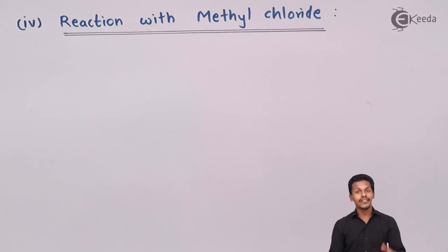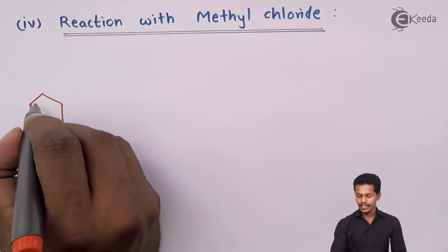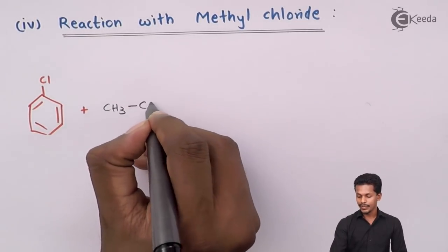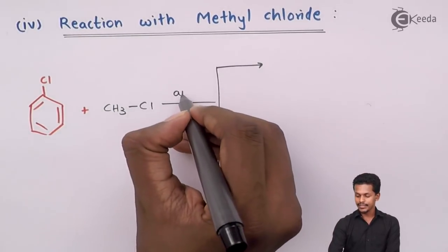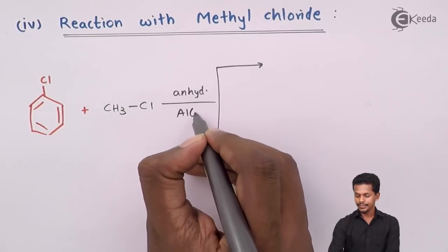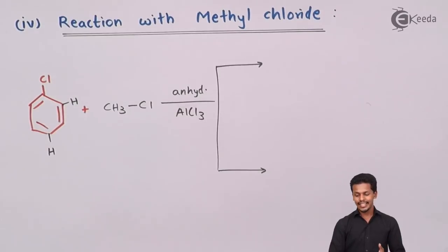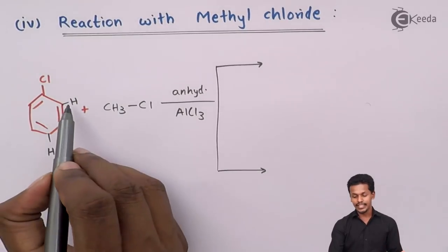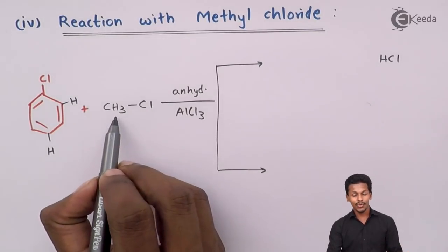In Friedel-Crafts alkylation, if chlorobenzene is reacted with methyl chloride using anhydrous AlCl3, the hydrogen at the ortho position as well as at the para position will undergo the substitution reaction — not the meta position. The reaction takes place such that the hydrogen along with Cl is removed in the form of HCl, and the only thing left is the CH3 group, which attaches at the ortho position.